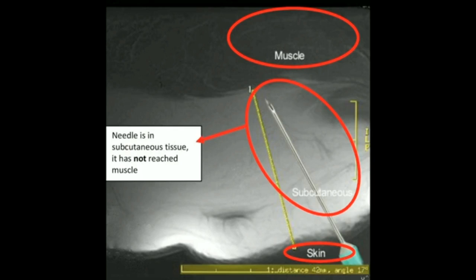The correct intramuscular injection technique is important to ensure pain is minimized and drug absorption is maximized. Injection into anything other than muscle affects drug absorption and could cause injury. For example, an unintended subcutaneous injection is usually related to difficulty assessing the thickness of the subcutaneous fat layer. Injection into a nerve can result in motor or sensory complications.